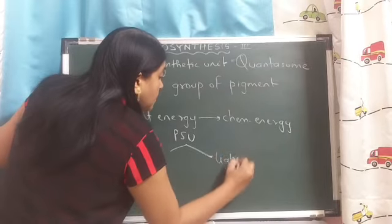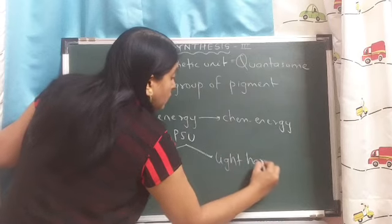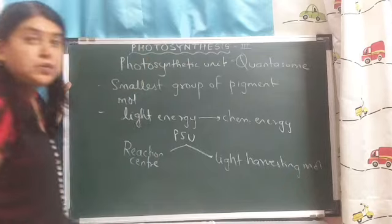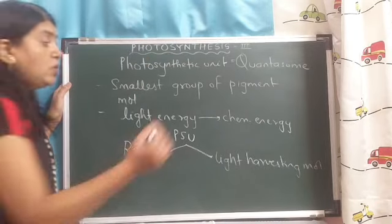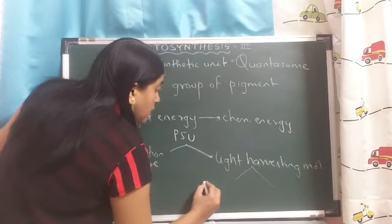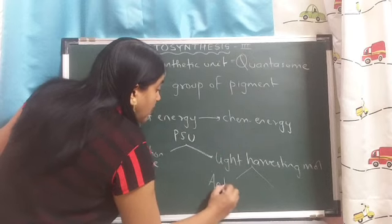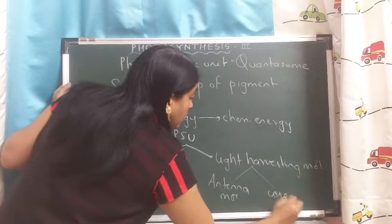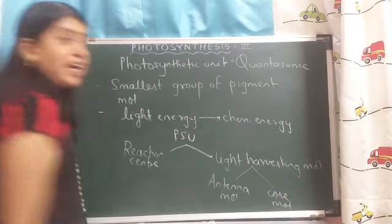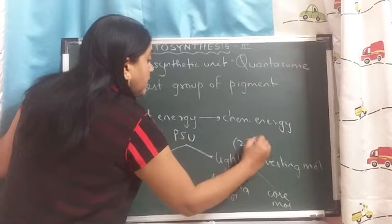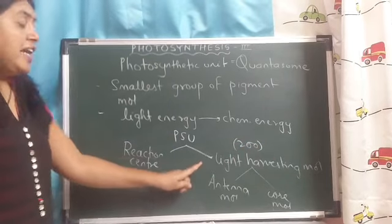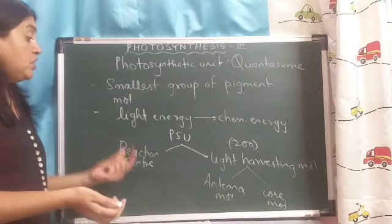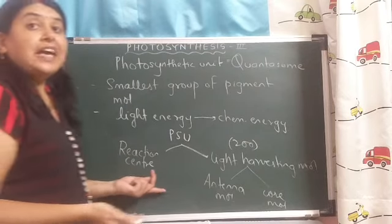Second, it consists of light harvesting molecules. These light harvesting molecules are of two types: antenna molecules and core molecules. Light harvesting molecules can be about 200 in number. Light harvesting molecules absorb energy of wavelength which is lesser than that of the reaction center.